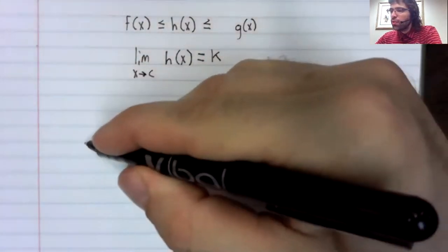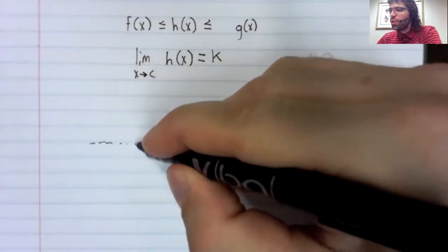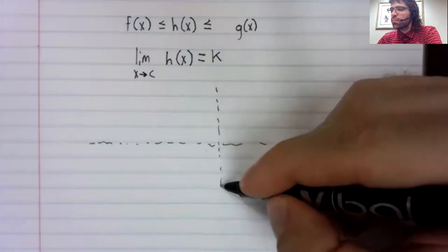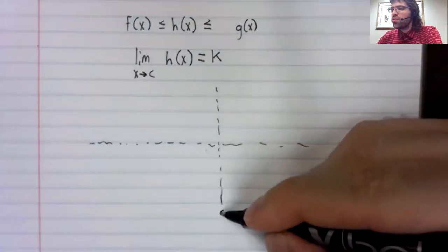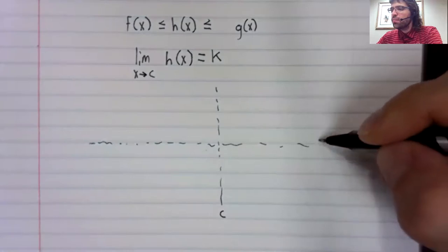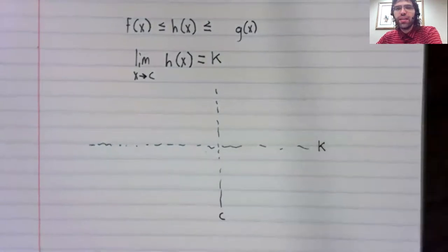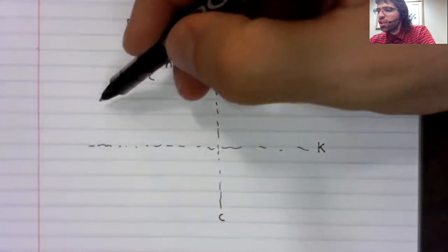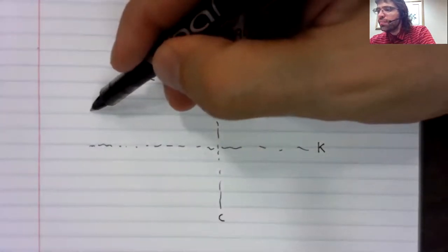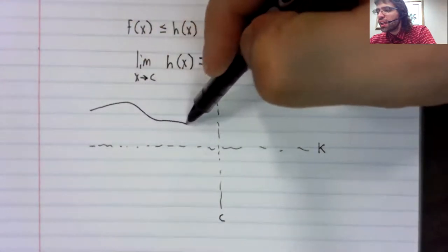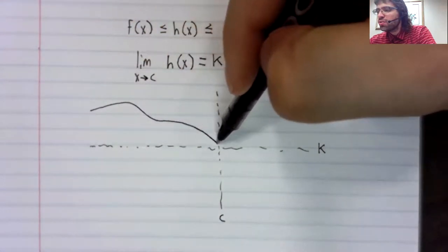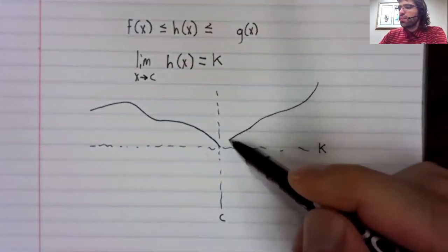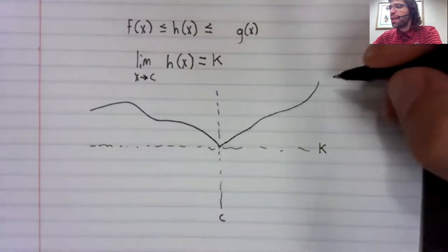So let's try to visualize this. Here is a C and here is K. And you have some function G. And as X approaches C, G approaches K.